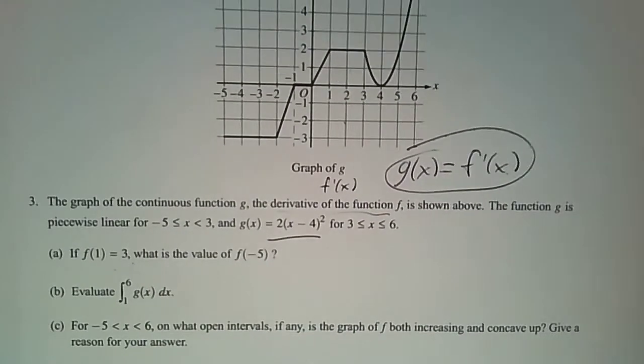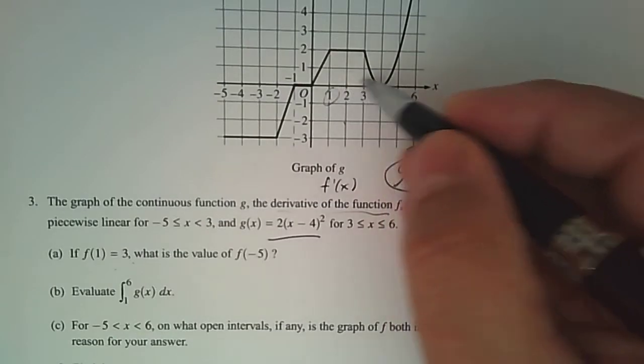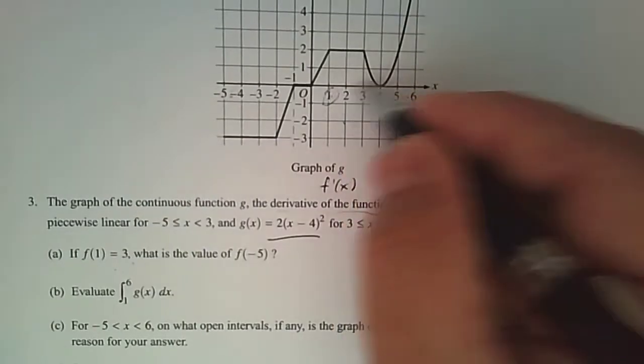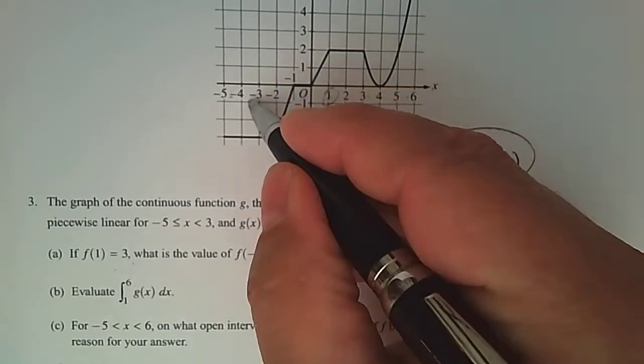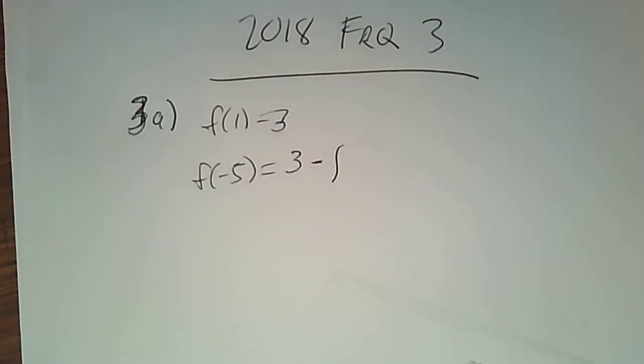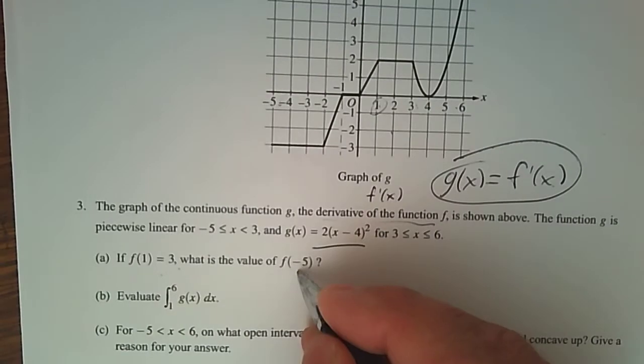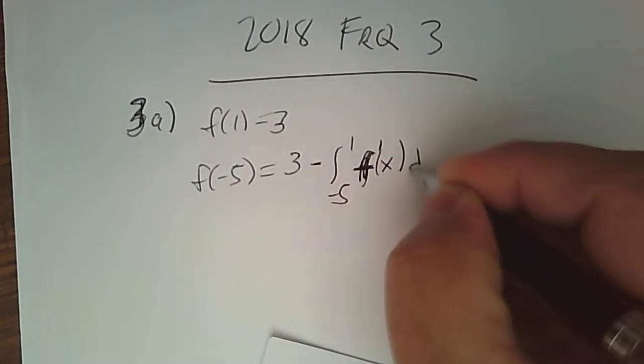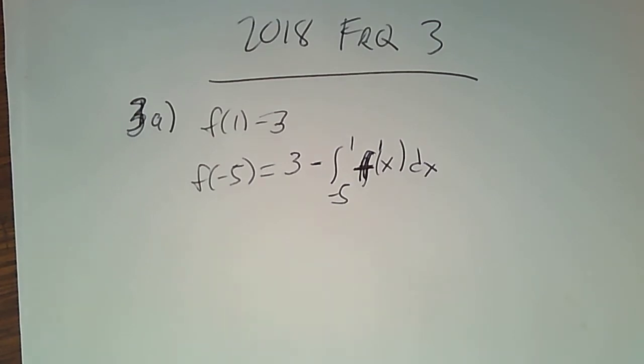But I want you to notice that normally we start at 1 and then we're given a value ahead of 1, like what's the value at f(3), where you're going forward. This one you're actually going backwards. So when you go forward, you're adding the integration. And when you go back, you're going to subtract. So I'm going to subtract and I'm going to integrate the increase or decrease. And it's negative 5 I'm looking at. And it's from negative 5 to 1 is what I'm looking at. This is the derivative, f'(x) dx. So there's the setup. So again, why am I not adding? Why am I subtracting? Because I'm going backwards.